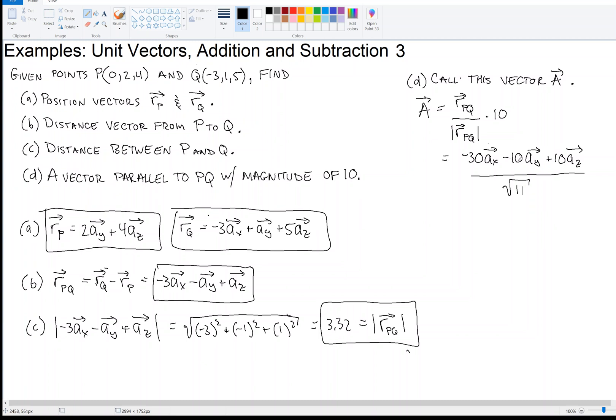So I'm going to take minus 30 divided by the square root of 11 for the X direction, right? Minus 10 divided by the square root of 11 for the Y direction, and 10 divided by the square root of 11 for the Z direction. So when I get that, or when I do that, I've got my vector A.